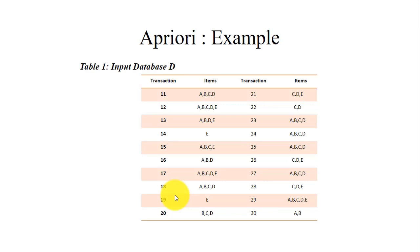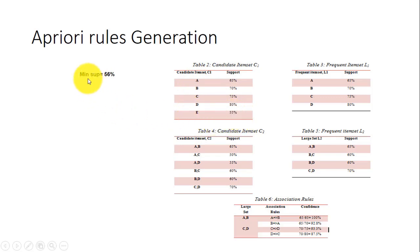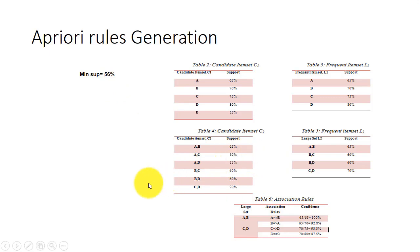Here is an example using a transaction dataset with candidate set generation. We start with single items A, B, C, D, and E, and a minimum support of 56%. The support count of each item is calculated. In this case, only item E has a support value of 55%, which is less than the minimum support of 56%, so it is discarded. Next, we generate candidate item set 2, which contains combinations such as AB, AC, and AD, and again calculate the support for each. Items with support less than minimum support are discarded; those meeting or exceeding it are retained in the frequent item set.